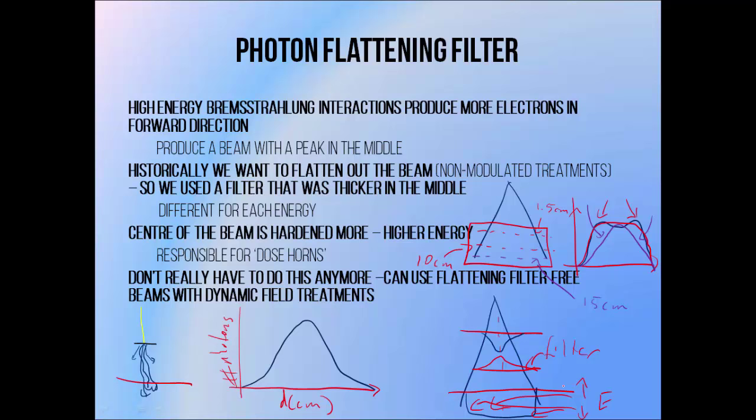These flattening filters absorb a significant portion of the beam, so they reduce the dose rate considerably. If you take the flattening filter out of the beam, you can get a dose rate about four times higher. A lot of the beam also scatters as it passes through the flattening filter, which can result in dose outside of the field, which isn't great for the patient. Flattening filters were historically quite necessary to obtain uniform, clinically useful beams, but with the introduction of intensity modulated treatments they're no longer quite so necessary, though they remain the default option for most medical linear accelerators.